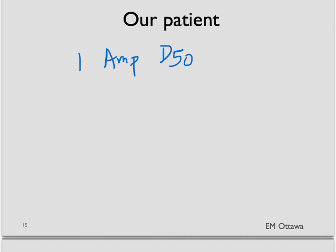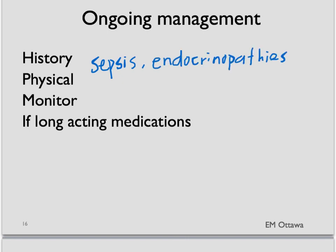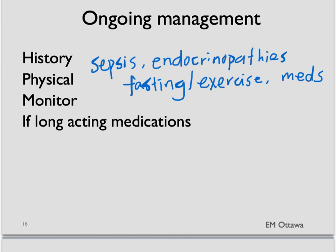He is now able to answer your questions. We want to ask those questions to find out if he has the four main causes of hypoglycemia: whether he has an infection or sepsis, endocrinopathies, whether he has been fasting or doing a lot of exercise, or whether he takes any medication regularly to decrease his blood sugar or has been taking anything else. Once the sugar is normal, we will monitor it every hour until it's stabilized, and we will also monitor his level of consciousness. If the patient has taken long-acting hypoglycemic medication, he might need longer monitoring or even admission.